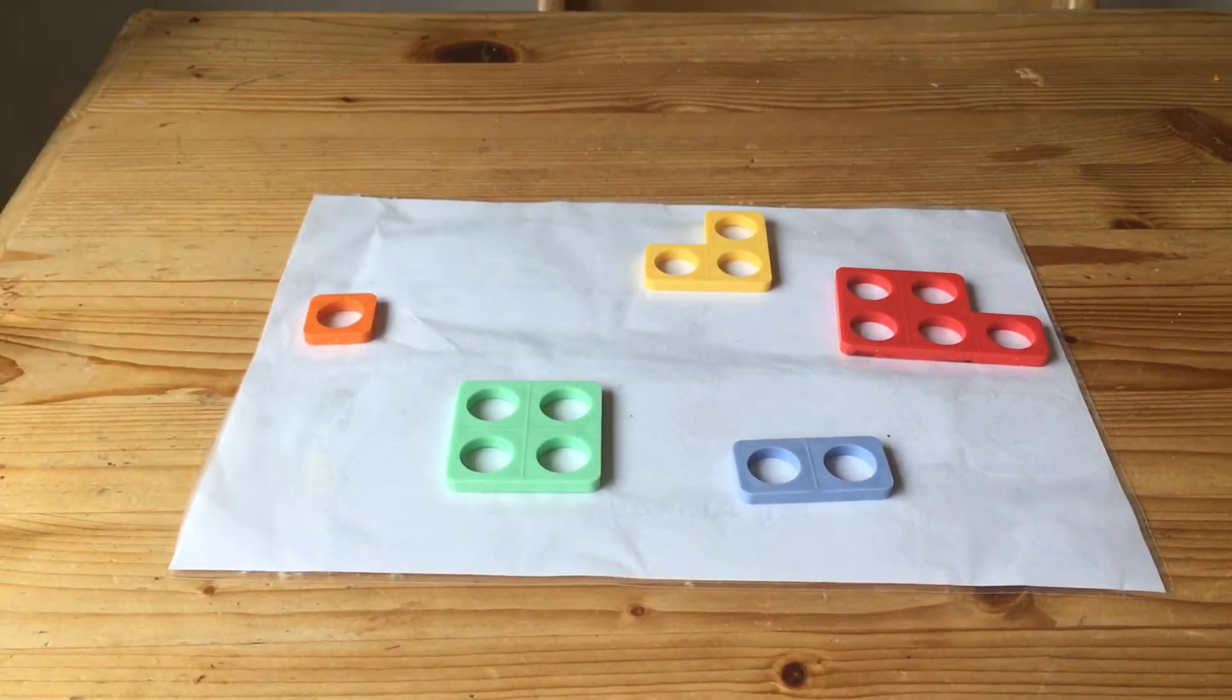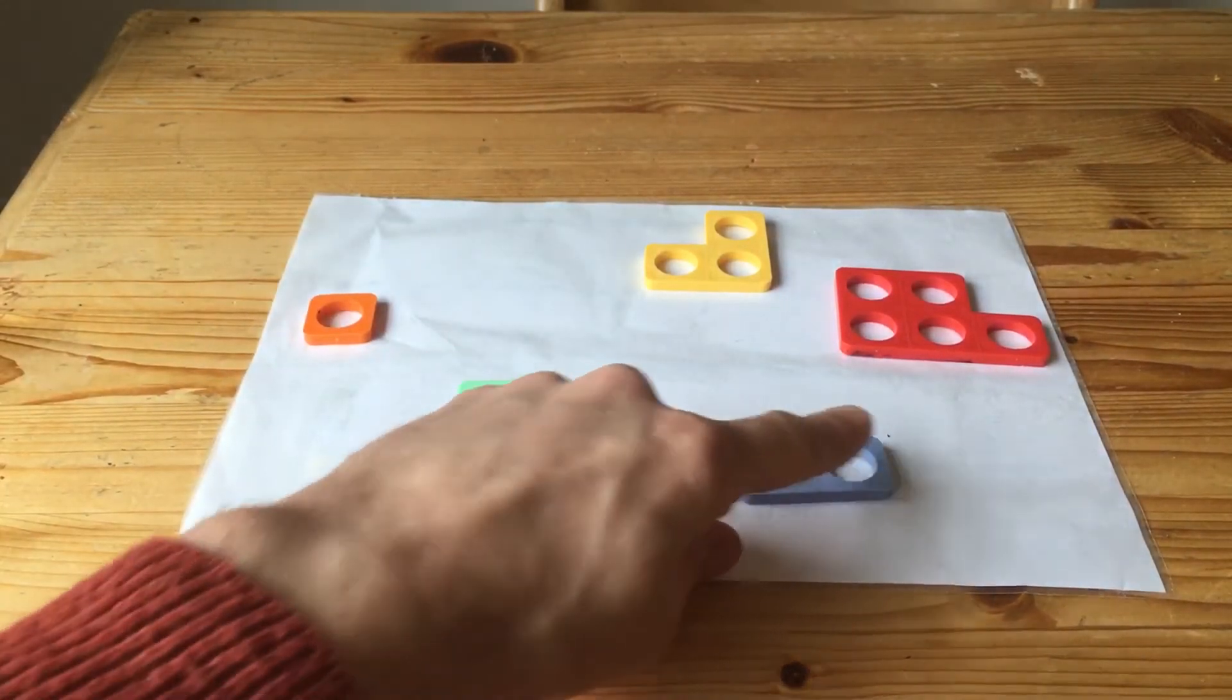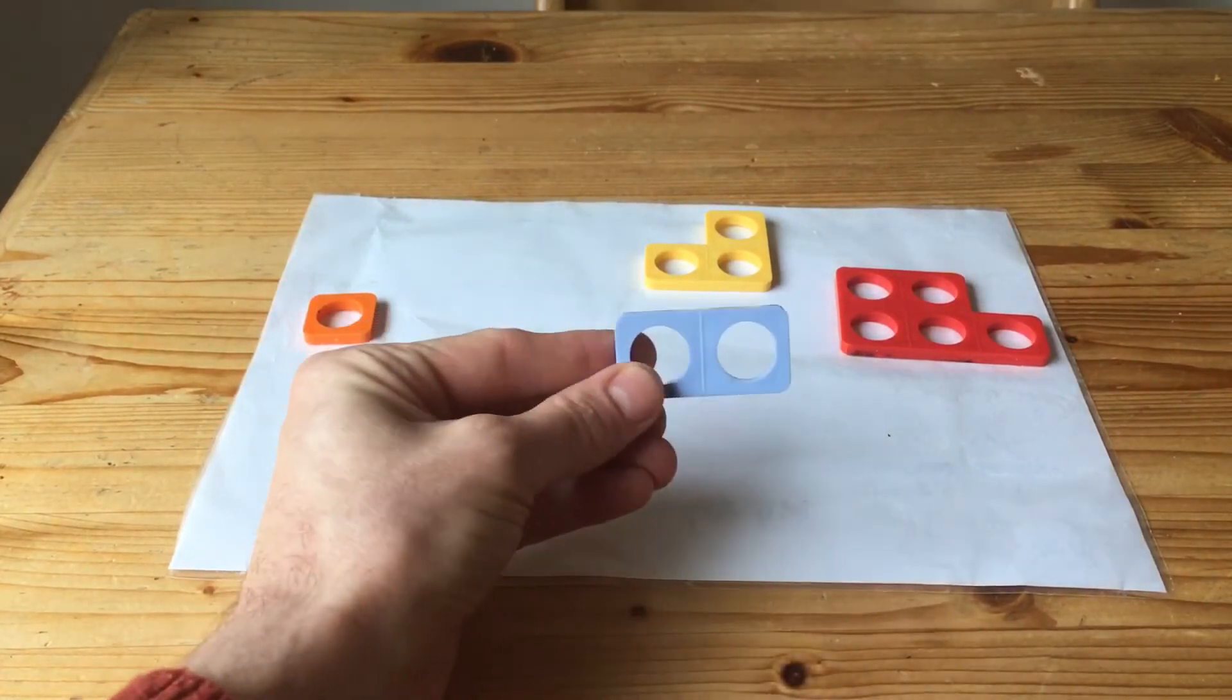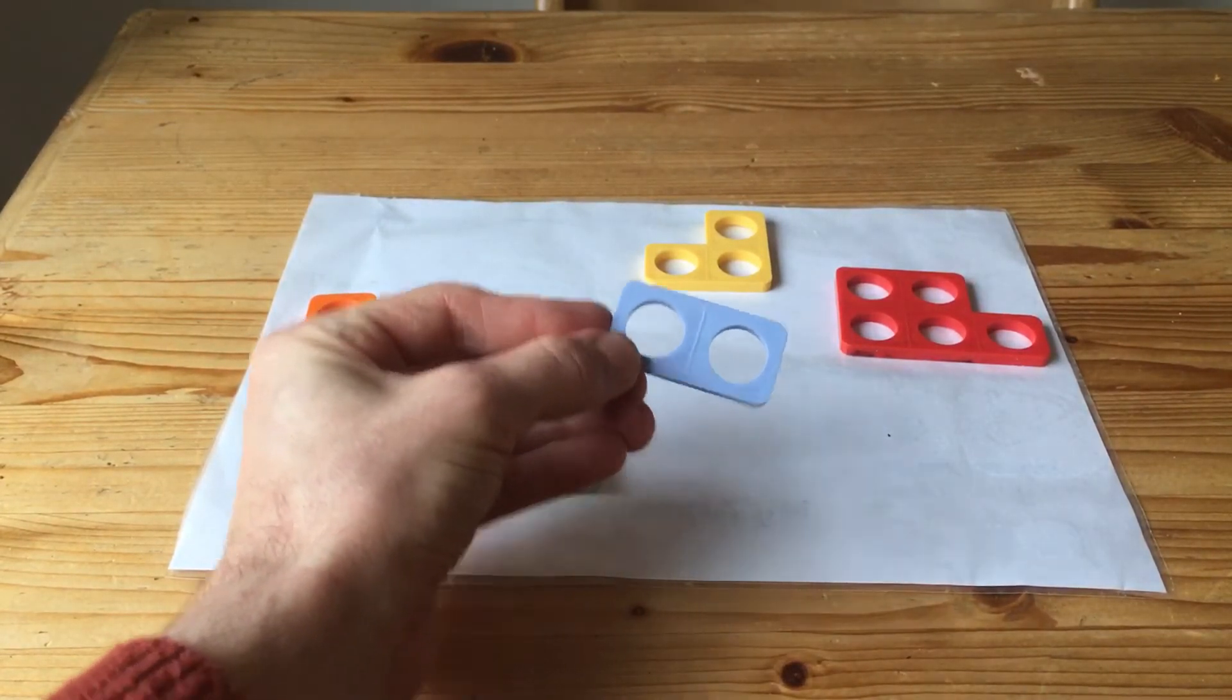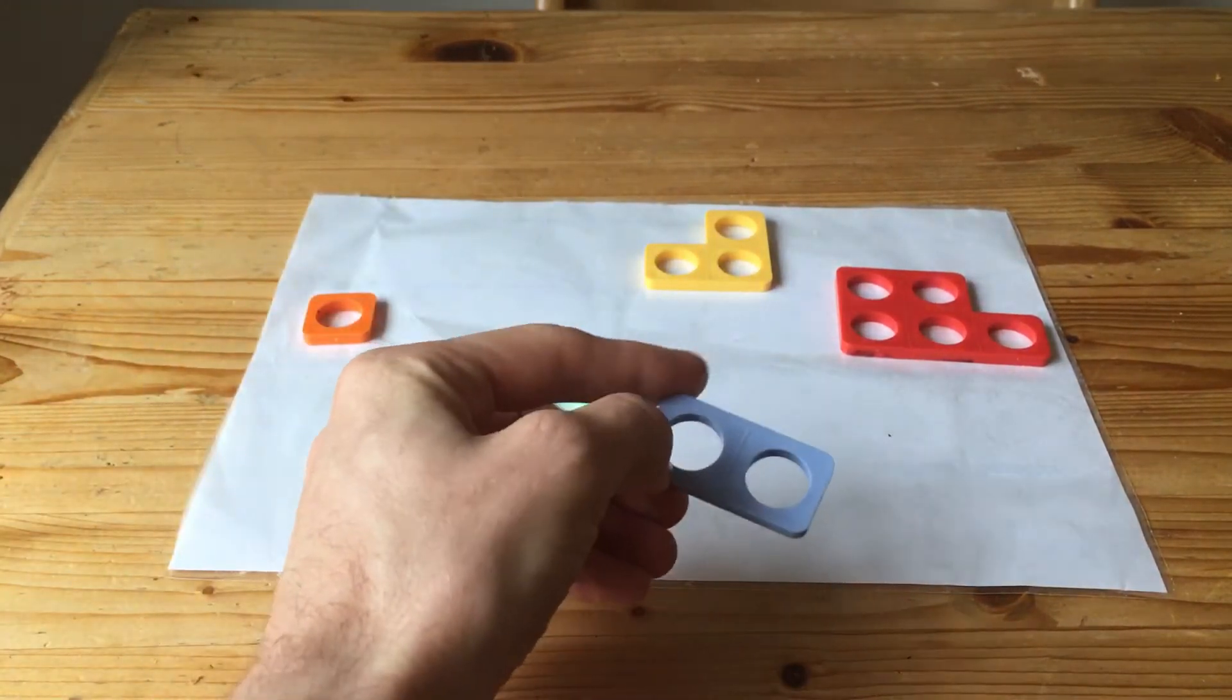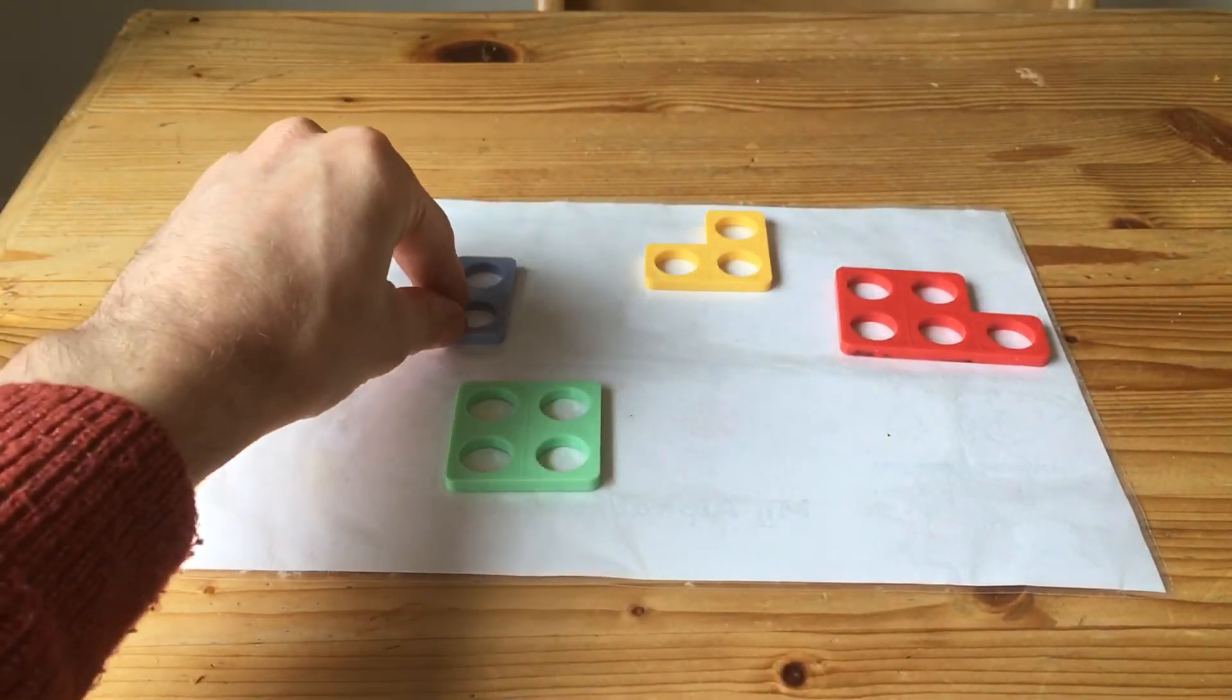Can you see number two? Well done. This one's got two holes. Can you see anything else about it? Yes, it looks a bit like a rectangle doesn't it? I'm going to put that over there.